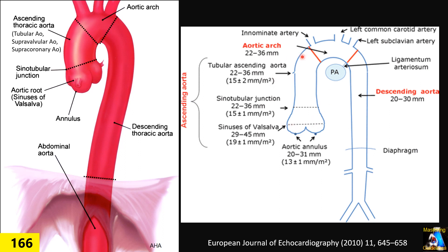Ascending aorta over 3.5 cm is abnormal. The aortic arc is the same. Thoracic descending and proximal abdominal aorta above 3 centimeters will be abnormal.